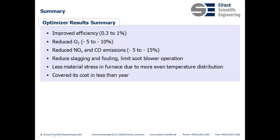Here is a summary of the results. We improved efficiency by 0.3 to 1%. We reduced oxygen levels by minus 5 to minus 10%. We reduced NOx and CO emissions anywhere from minus 5 to minus 15%. We also reduced slagging and fouling in the power plant, and there was less material stress in the furnace because of the more even temperature distribution inside the boiler. Most importantly, the development costs were covered in less than a year.